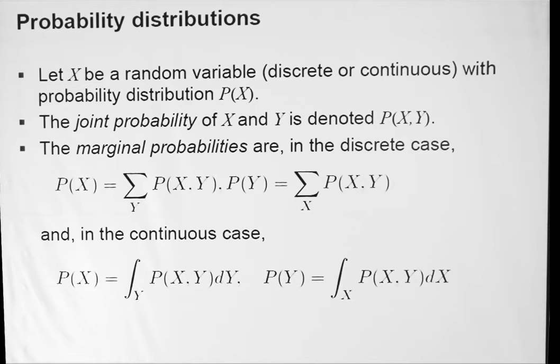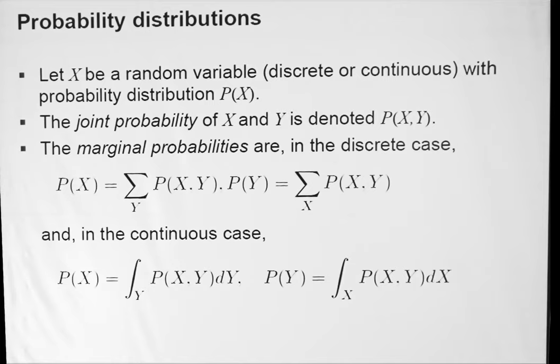So I'm going to assume you all know what random variables are and that we know about distributions of random variables. We denote the random variable X and its distribution with P of X, and we denote the joint probability of two random variables X and Y as P of X comma Y. We can compute the probability of X itself as a sum over the values of Y of the joint probability of X and Y, and these probabilities computed in this manner are called marginal probabilities.